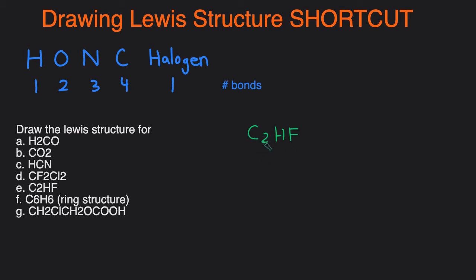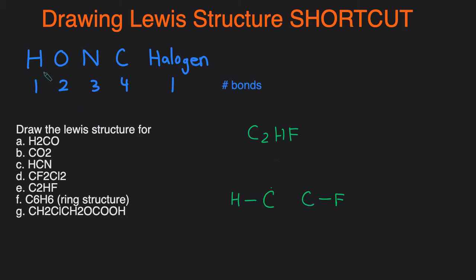Next example, C2HF. So we have 2 carbons, and we know that both carbons are going to be in the middle. We have an H, so we'll single bond one H to one carbon. Then we have an F, and F also likes to form single bonds. If we try to put F on the same side as H, it's impossible to make both carbons have 4 bonds, because we'd have to add 4 bonds between the carbons, and no two atoms can form 4 bonds with each other. So we attach the F to the carbon on the right. That way, H has 1 bond and the halogen has 1 bond. Then to give each carbon 4 bonds, we put a triple bond between the two carbons. Each carbon now has 4 bonds, the H has 1, and the halogen has 1. Then we just add lone pairs so the halogen has an octet.